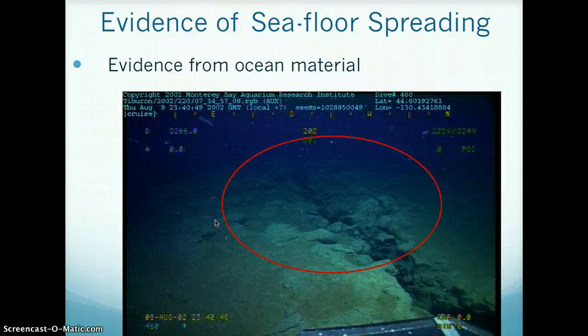Scientists have found evidence of seafloor spreading. The first evidence is from ocean material. Pillow lava found on the ocean floor only forms when molten material hardens quickly after erupting. This type of lava is found near mid-ocean ridges. The red circle in the image is showing pillow lava.